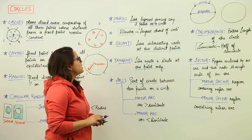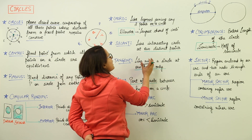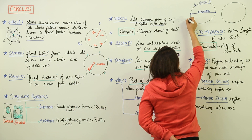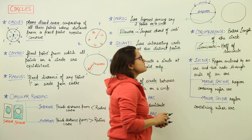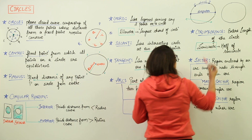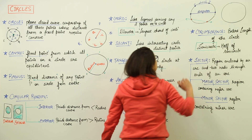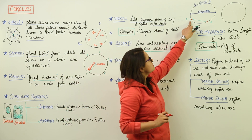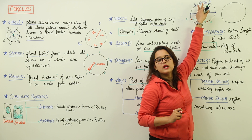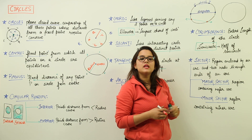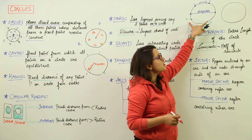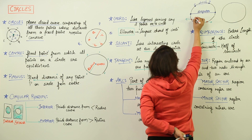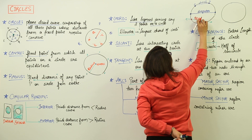Next is the secant. In secant, we have a line intersecting a circle at two distinct points. There could be a line which intersects this circle at, say for example, two different points — you can see here and here. Now, I am not saying line segment, I am saying it is a line. If a line segment is passing through two points on a circle, that is a chord. If there is a line passing through two points on a circle, that will be known as a secant. So this is the secant of this circle.